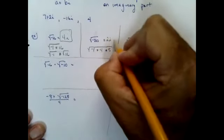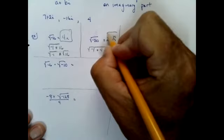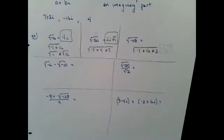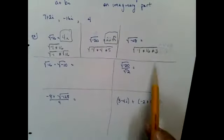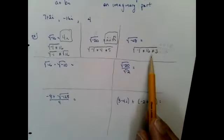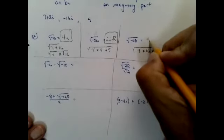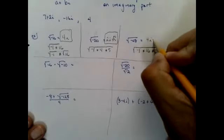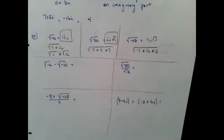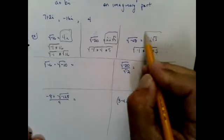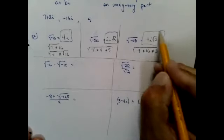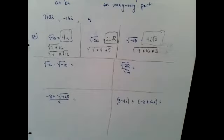I took negative 20 and broke it up into negative 1 times 4 times 5. There's my i, there's a 2, and I'm left with the square root of 5 — so that's 2i√5. Same idea for the next one: 4i√3. Questions on the first three? Hopefully a lot of you are saying 'yeah, I remember how to do this.'